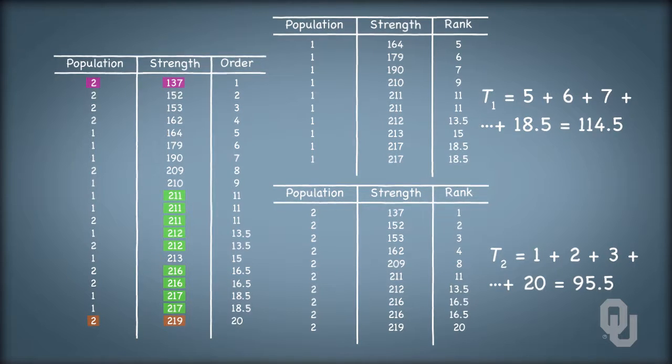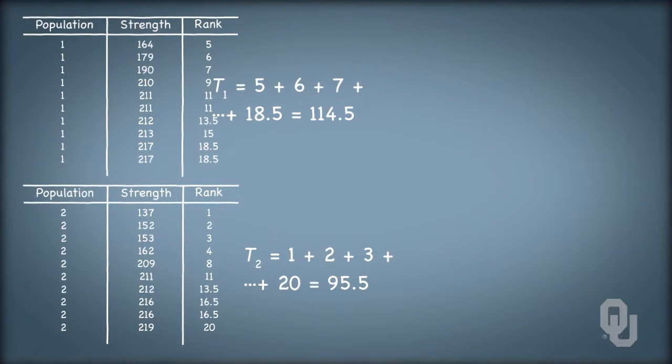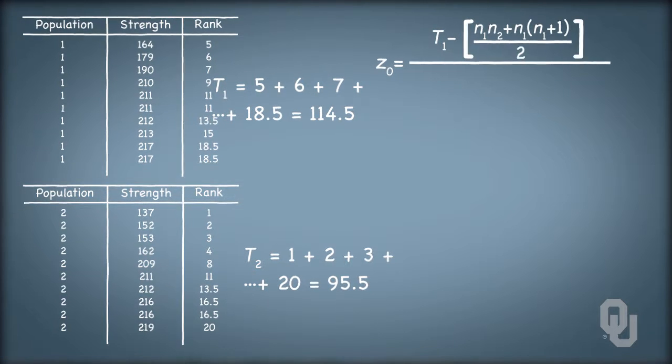Now to implement a test statistic. When sample sizes for each population are at least ten, we can use a z-statistic. We compare T1, the sum of the ranks for population one, to the expected value of T1, and divide the difference by the standard deviation expected from T1. The expected value of T1 is what we would expect the sum of the ranks to be if population one and population two are distributed equally.